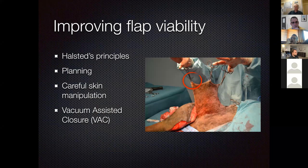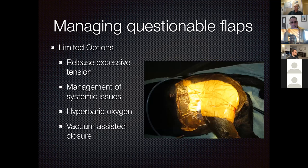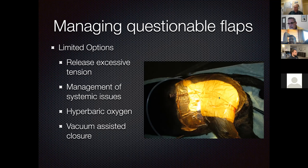To improve flap viability: follow Halstead's principles, plan the flap beforehand, use careful skin manipulation, and consider vacuum-assisted closure. If you have a suction unit in your practice, you can fashion your own VAC system—note that a conventional abdominal suction unit may have a duty cycle and could burn out if run overnight. For VAC, the technique involves placing a non-adherent or foam contact layer over the wound, covering with Ioban, and applying a closed suction drain inside.